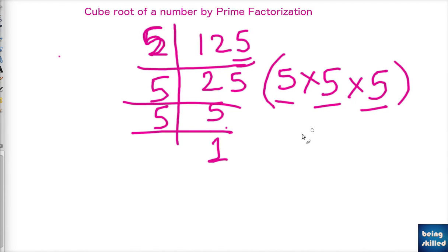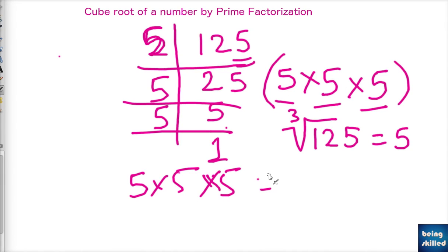So cube root of 125 equals to 5. Just to verify it, you can try to multiply it again. It will be 125. So this is how we calculate cube root of any number using the prime factorization method.